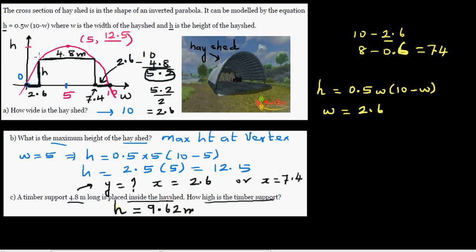What we are saying is this coordinate is 2.6 comma 9.62, and this coordinate X coordinate is 7.4 and the Y coordinate is 9.62.